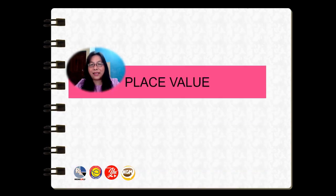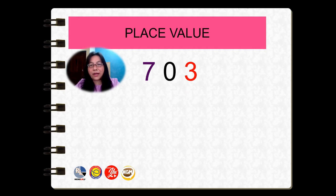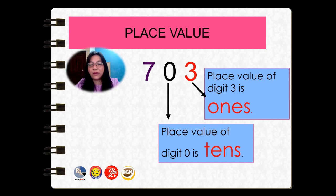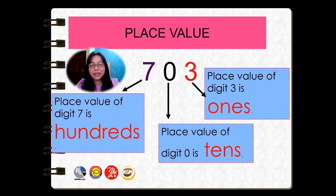Let's look at the next number — seven hundred and three. What is the place value of three? Place value of digit three is ones. What is the place value of digit zero? Place value of digit zero is tens. What about the place value of digit seven? Place value of digit seven is hundreds.